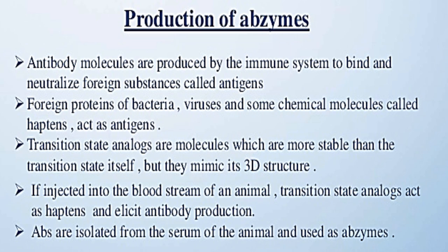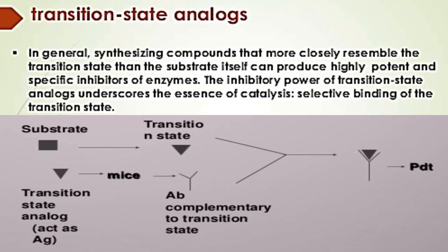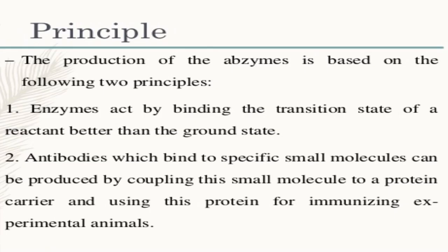If injected into the bloodstream of an animal, transition state analogs act as haptens and elicit antibody production. Antibodies are isolated from the serum of the animal and used as abzymes. The transition state analog appears similar to the transient transition state and acts as an inhibitor, binding to the antibody.